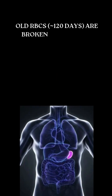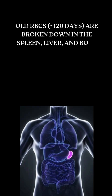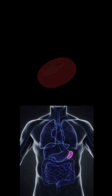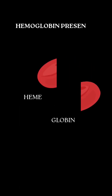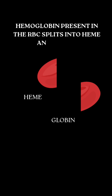Old RBCs are broken down in the spleen, liver, and bone marrow. Hemoglobin present in the RBC splits into heme and globin. Heme is the non-protein part and globin is the protein part.